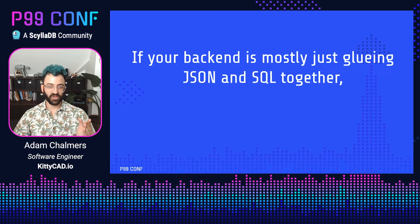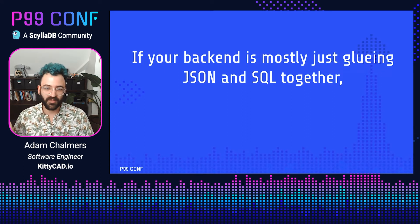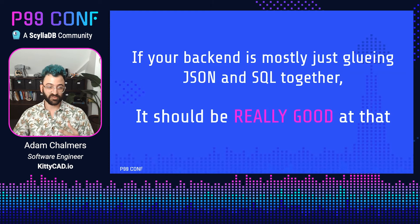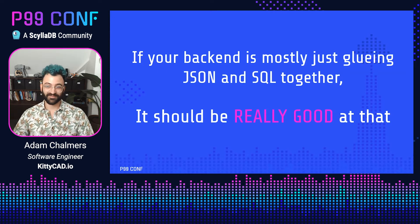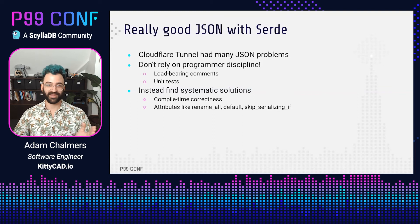The two examples I like to talk about are JSON and SQL. Backend people — most of writing backends is just gluing JSON and SQL together. That's the truth. We don't like to talk about it, but it's true. My philosophy is: if your backend is mostly just gluing JSON and SQL together, you should be really great at gluing JSON and SQL together. Rust has two libraries that I think are best in class for JSON and SQL and they're powered by macros. I want to show you how they lead to more correct code.